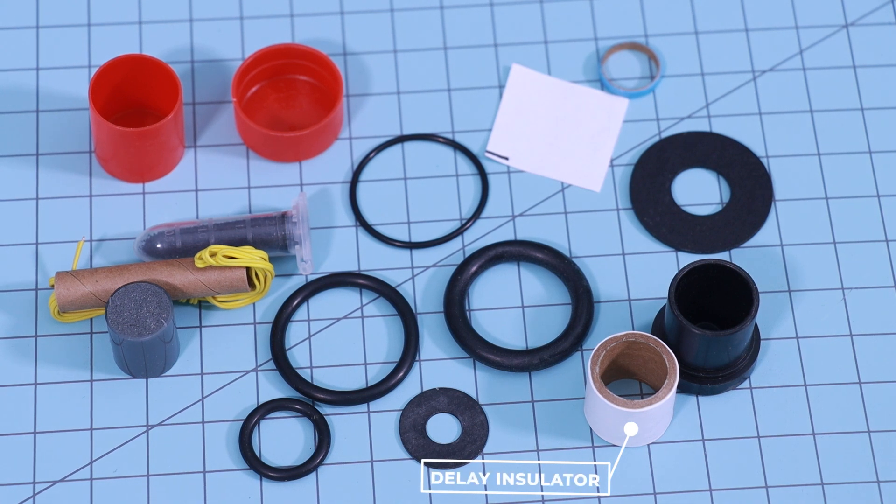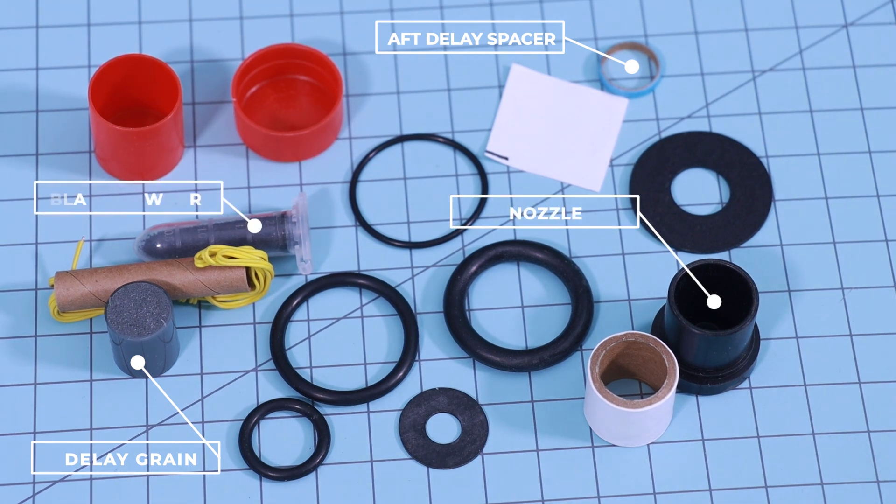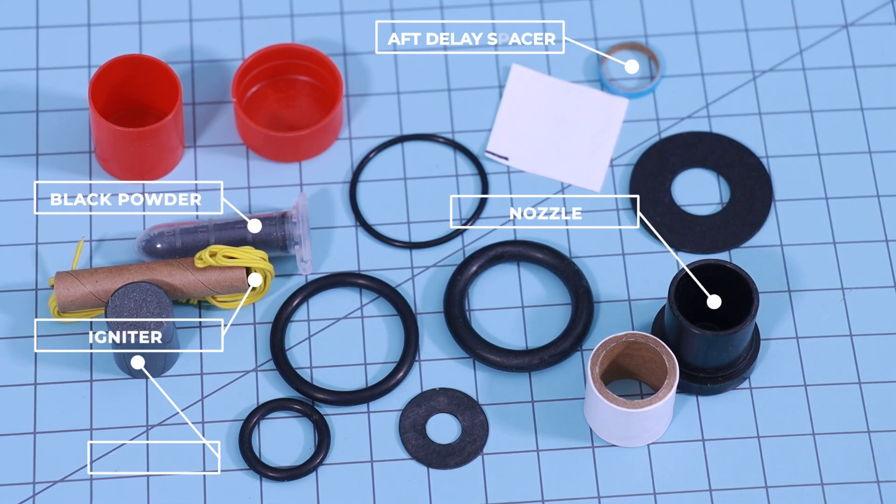We have the delay insulator, the delay grain, the aft delay spacer, the nozzle, the black powder ejection charge, and the motor igniter.